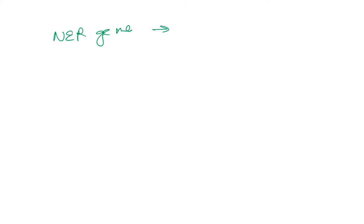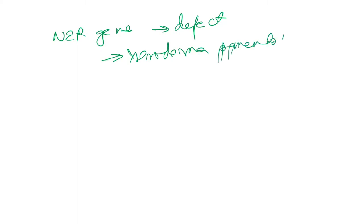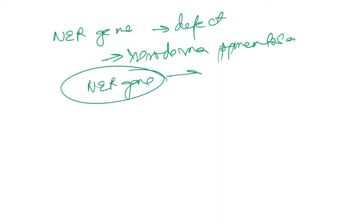Ultraviolet radiation also causes a defect in the NER gene — nucleotide excision repair gene — and this defect leads to xeroderma pigmentosa. So you have to remember: NER gene defect leads to xeroderma pigmentosa.